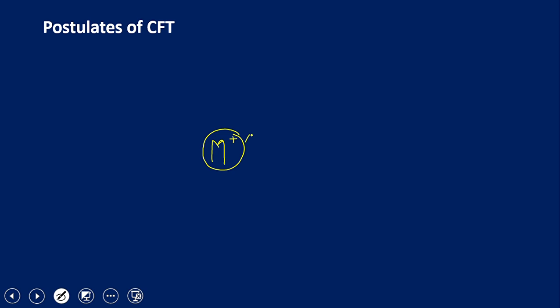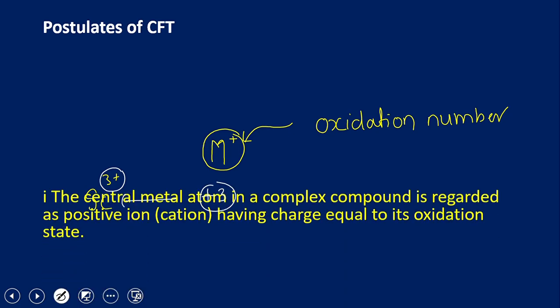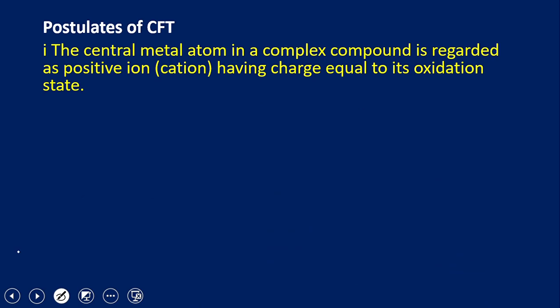Now let's discuss the postulates of crystal field theory. The first postulate states that the central metal atom in a complex compound is regarded as a positive ion. The metal is always present in the form of a cation, bearing a positive charge equal to its oxidation number. For example, scandium³⁺ indicates scandium bears three positive charges, meaning it is in the +3 oxidation state.